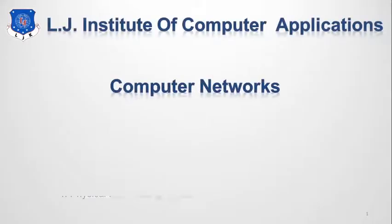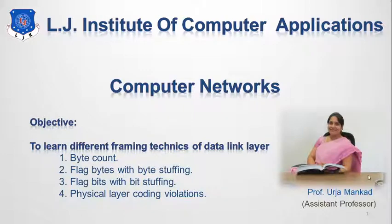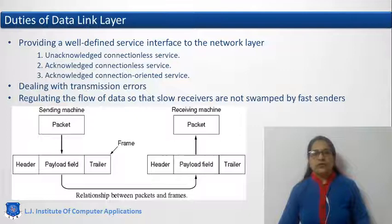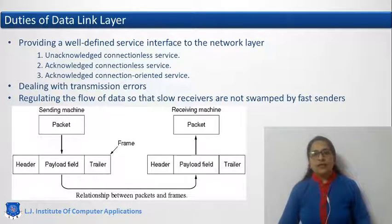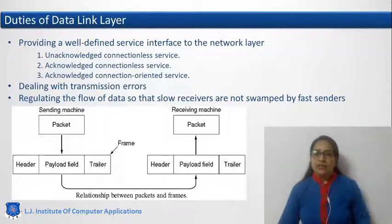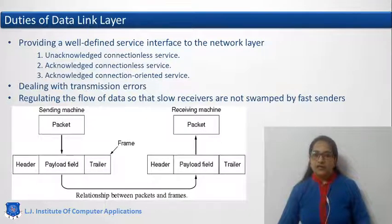Hello everyone. Let us discuss different framing techniques of the data link layer. First of all, we have to discuss what is the data link layer. The data link layer is above the physical layer and it provides services to the network layer. It collects the network packets from the network layer, converts them into frames, and transmits them to the physical layer. The main duties of the data link layer are framing, error handling, and flow control.